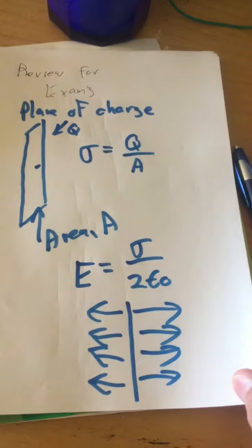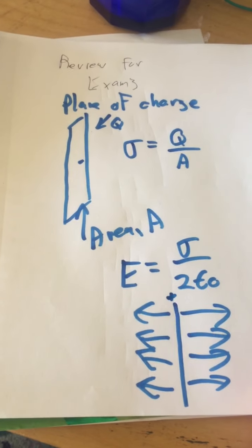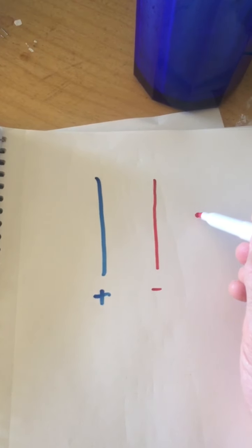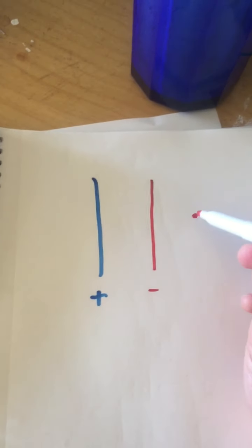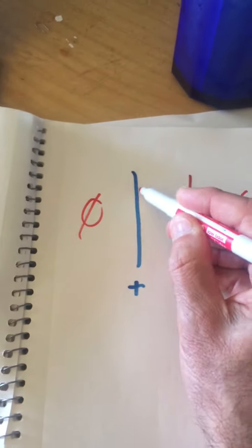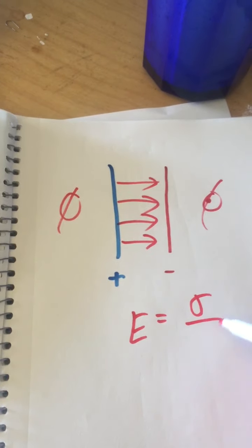What we did in class is we had two planes of charge — one being positive, the other negative. The electric fields at points outside are caused by both planes in opposite directions, so they cancel out. There's no electric field outside the planes; all the electric field is confined to the region between them. Because it's a combination of the electric field from both planes, the electric field there is going to be equal to sigma over epsilon zero.